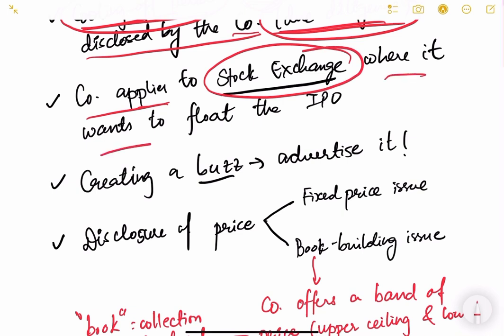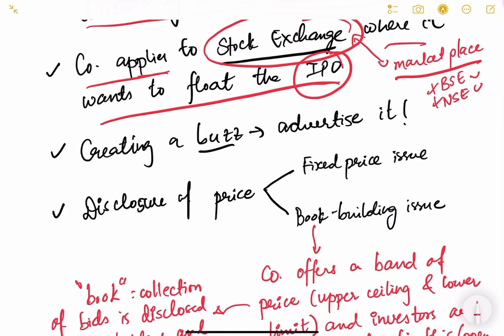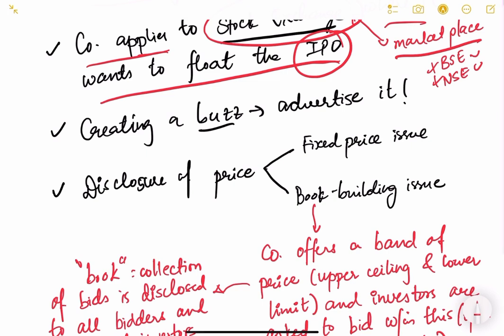After that, the next step is that the company applies to a stock exchange where it wants to float the IPO. The IPO has to be floated in some market, which is basically the stock exchange — a kind of marketplace where you can buy and sell shares. In India there are two famous stock exchanges: Bombay Stock Exchange and National Stock Exchange. The company can apply to either one depending on its choice.